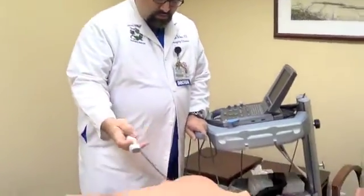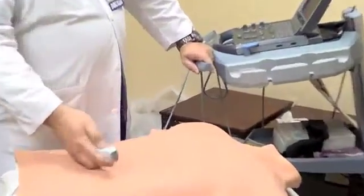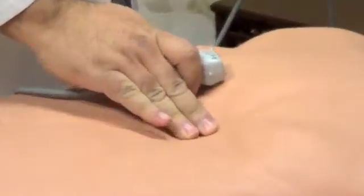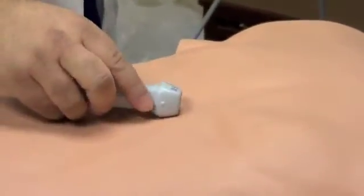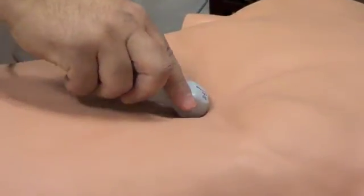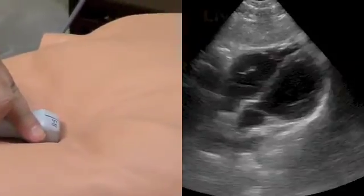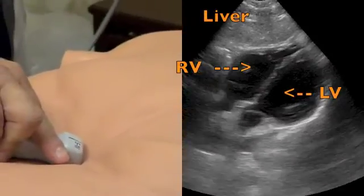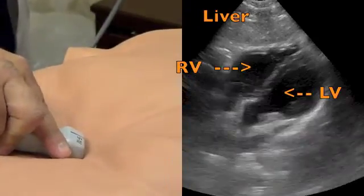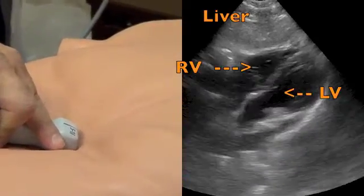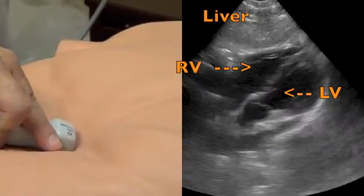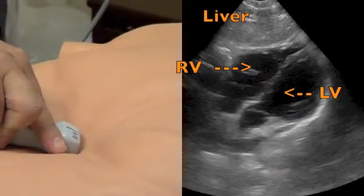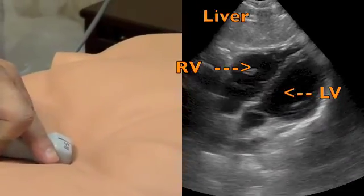Then you can look for signs of right heart strain. You can do a subcostal view. You're going to place your probe about one to two centimeters subcostal, as parallel as you can. To see the subcostal view, you should be able to see the liver, the right ventricle, and the left atrium in the top part of your screen, with the left ventricle and left atrium in the inferior part of your screen.